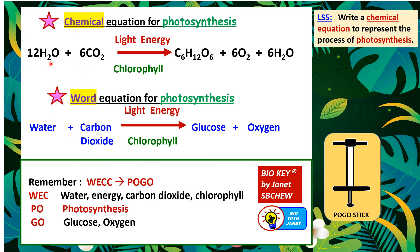Hydroxide groups combine together to form oxygen and water. If you write the net equation, it becomes 6H₂O on the reactant side with no H₂O on the product side. Anyway, this is from the textbook, so stick to this chemical equation. If asked to write the chemical equation for photosynthesis, please write this one. There is also a word equation — water + carbon dioxide, using light energy absorbed by chlorophyll, produces glucose and oxygen.